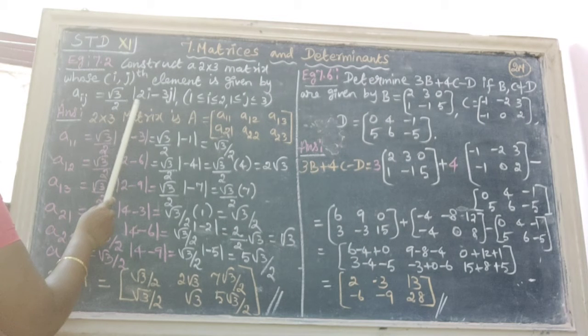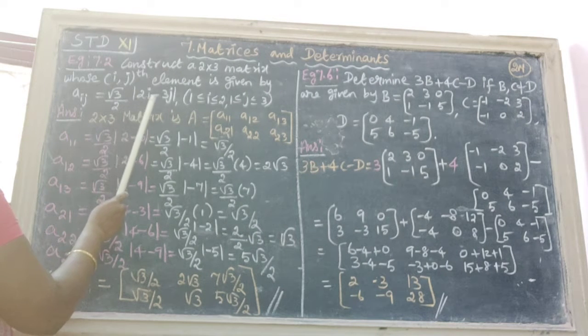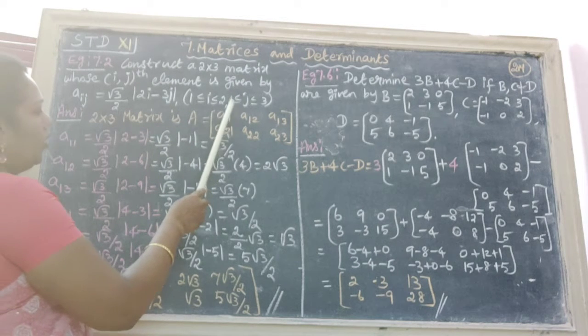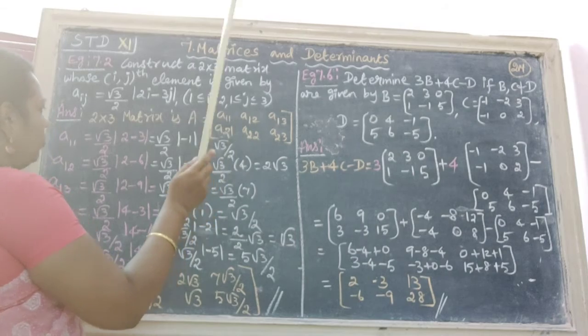Example 7.2: Construct a 2 cross 3 matrix whose i comma jth element is given by aij equal to root 3 by 2 determinant 2i minus 3j where 1 less than or equal to i less than or equal to 2 comma 1 less than or equal to j less than or equal to 3.